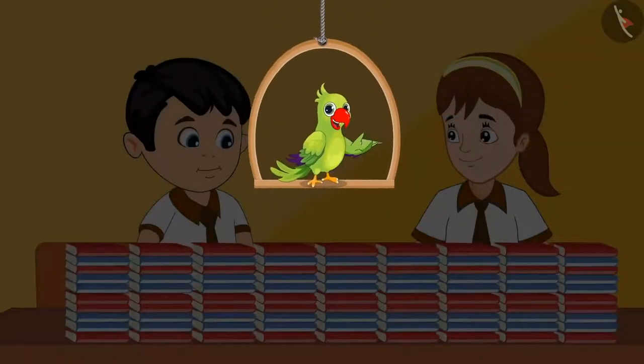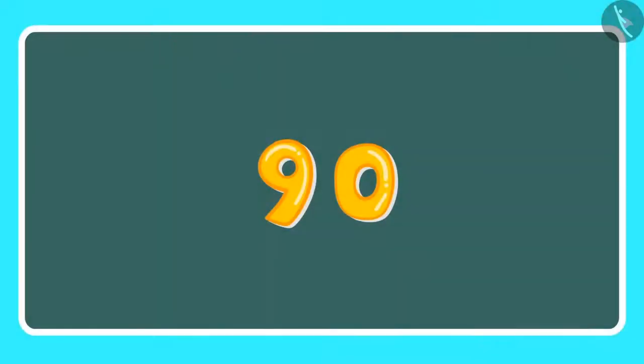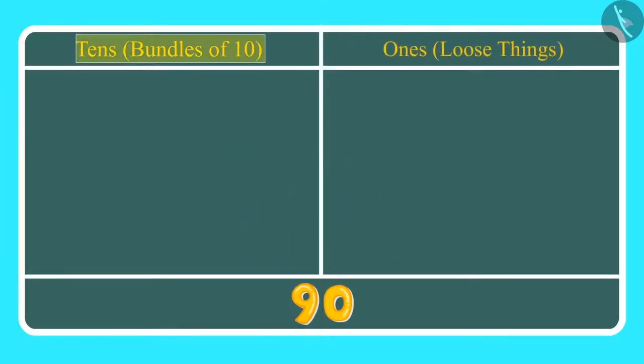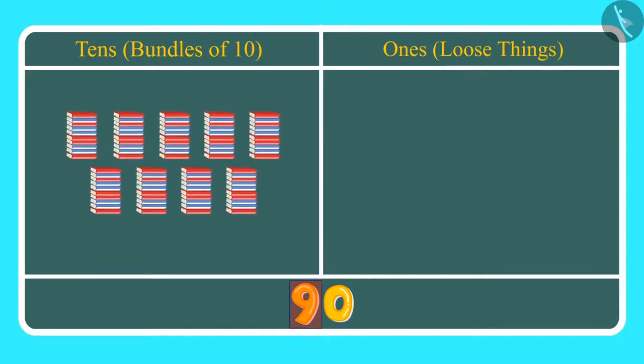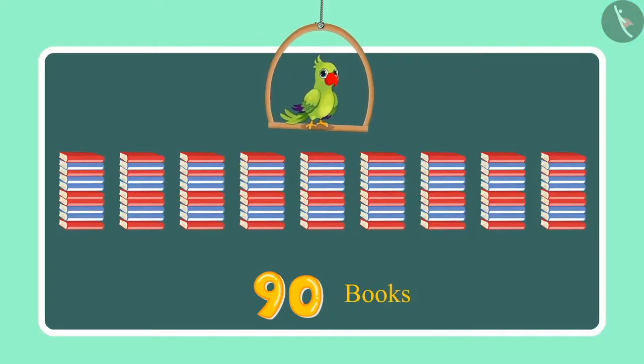Children, can you tell me how many ones and how many tens are there in 90? Come on, let us see. This is how we write 90. Here 9 is at the tens place and 0 in the ones place. This means we have 9 tens, which we can also call 9 bundles of 10, which is 90 and there are no ones here. So, did you see children? 9 tens means 90 books. This shows that Chotu and Aarti have counted 90 books so far.